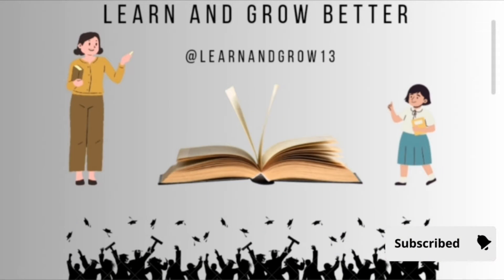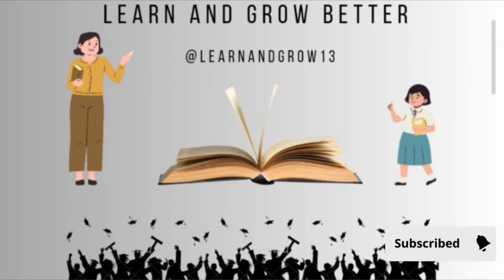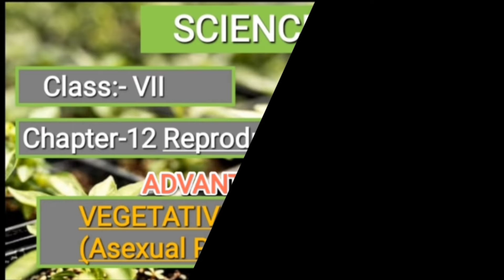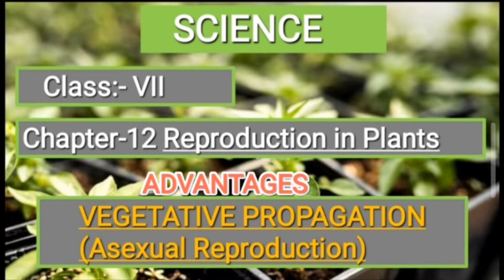My dear super champs, welcome back to our channel, Learn and Grow Better! Today we are covering Science Class 7, Chapter 12: Reproduction in Plants. In today's class, we are going to discuss the advantages of vegetative propagation, which is a way of asexual reproduction. In our previous video, we discussed vegetative reproduction in detail — what it is, what the vegetative parts of a plant are, and how plants reproduce naturally and artificially.